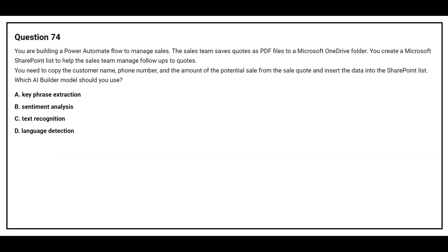Question number 74. You are building a Power Automate flow to manage sales. The sales team saves quotes as PDF files to a Microsoft OneDrive folder. You create a Microsoft SharePoint list to help the sales team manage follow-ups to quotes. You need to copy the customer name, phone number, and the amount of the potential sale from the quote.